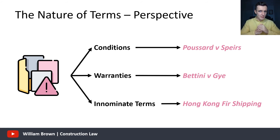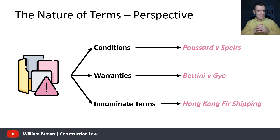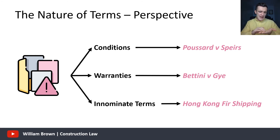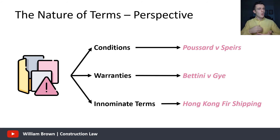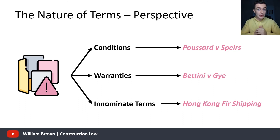The third category — innominate terms — tends to confuse people. Think of it as more of an approach than a strict category: the innominate term approach. It applies where it is not clear whether a term is a condition or a warranty. In that circumstance you must look at what would happen if the term were breached and ask: would the breach deprive the innocent party of substantially the whole benefit of the contract? This formulation comes from the famous case of Hong Kong Fir Shipping.